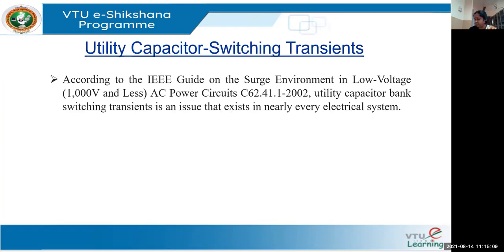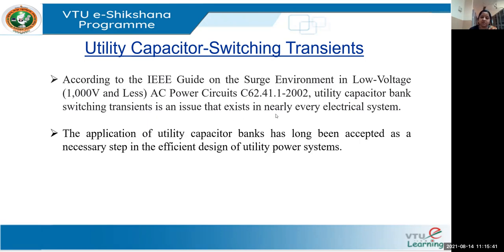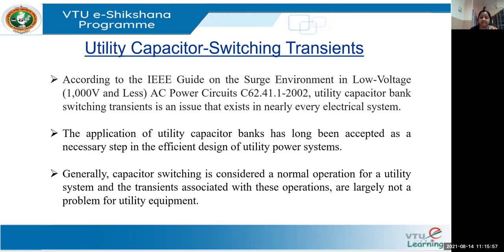To start with today's lecture, we need to understand that capacitor switching is very normal in the system. It's a serious issue, but it's not as damaging as high-power-frequency surges; however, it is very commonly seen. As per the IEEE guidelines, utility capacitor bank switching transients is an issue that exists in virtually every electrical system. These capacitor banks have long been accepted as a necessary consideration — we should keep in mind that these surges will affect certain equipment in the system.